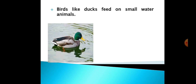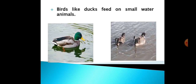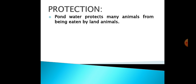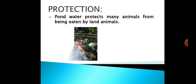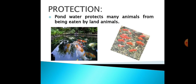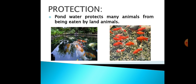Some birds like ducks feed on small water animals. Some land animals simply visit the pond to drink water. The pond water also protects water animals from land predators, as the animals are hidden in the water and will not be eaten by land animals.